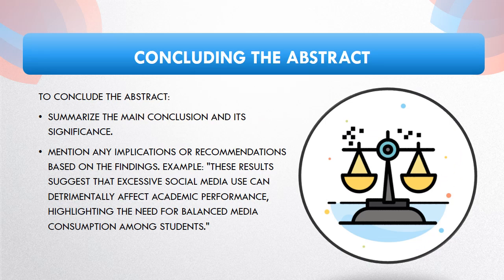To conclude your abstract, summarize the main conclusions drawn from your study and emphasize their significance. Mention any implications or recommendations based on the findings to underscore the broader impact of your research. For example, 'These findings indicate that excessive social media use negatively impacts academic performance, emphasizing the importance of promoting balanced media consumption among students.' This conclusion helps readers grasp the relevance and implications of your research within the context of broader academic discourse.